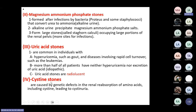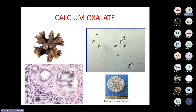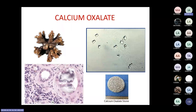The least common is cysteine stone. Calcium oxalate crystals can be seen in the urine — they can have smooth or rough surfaces — and on microscopy you may see calcium oxalate deposition inside the tubules.